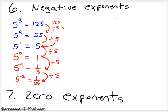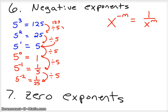Let's say you had x to the negative m power — that is 1 over x to the positive m power, so it reciprocates in that way. Let me give you a more complicated example to help you see what negative exponents do.